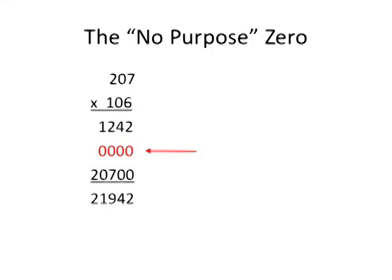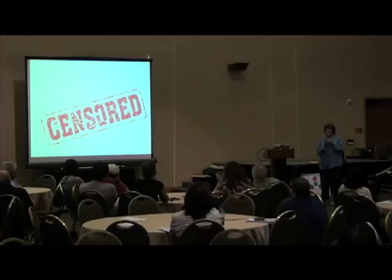I know we don't give kids too many three digit times three digit multiplication problems, but when we used to, somehow we had that magic row of zeros that would appear because the kids just followed the algorithm. Then we have censored language that we use in the mathematics class, watch your language, and the language that we use that causes misconceptions.